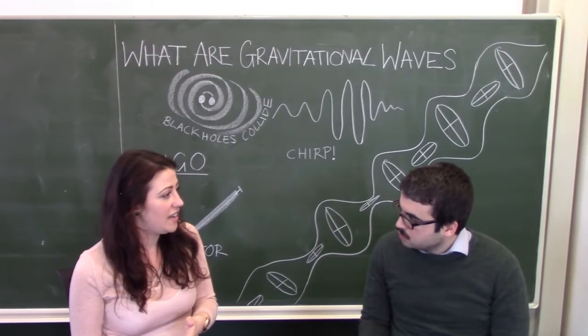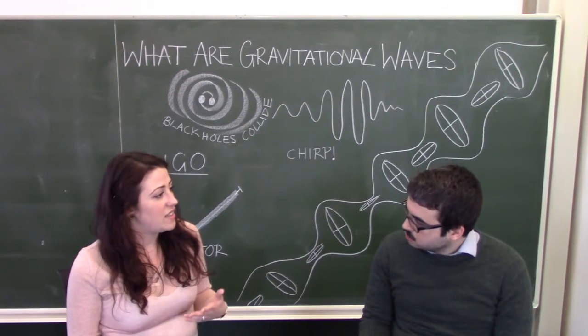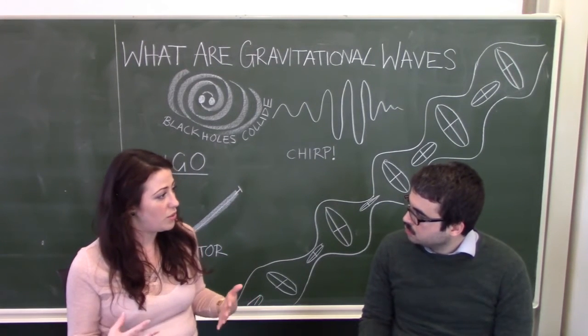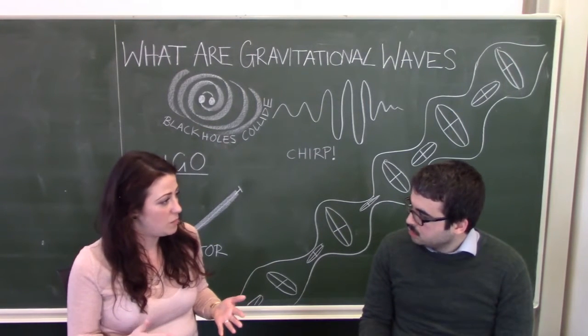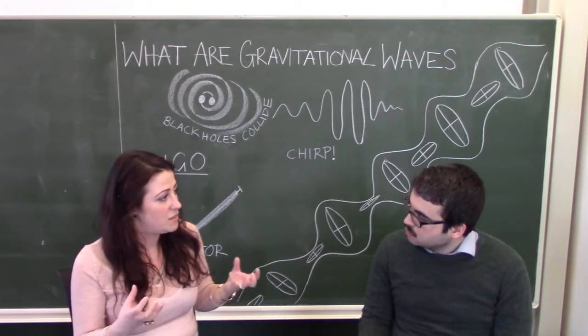And then a few hundred years later, Einstein came along and he said, well actually, I think that space-time is in fact curved. And what we call and experience as gravity is this curvature within space-time. So, objects with mass actually bend space.